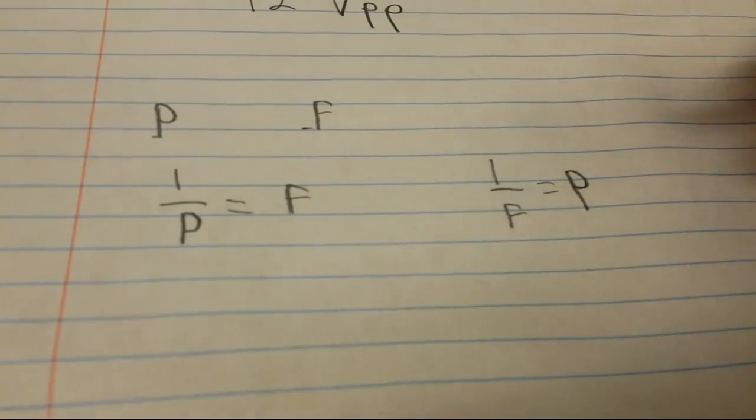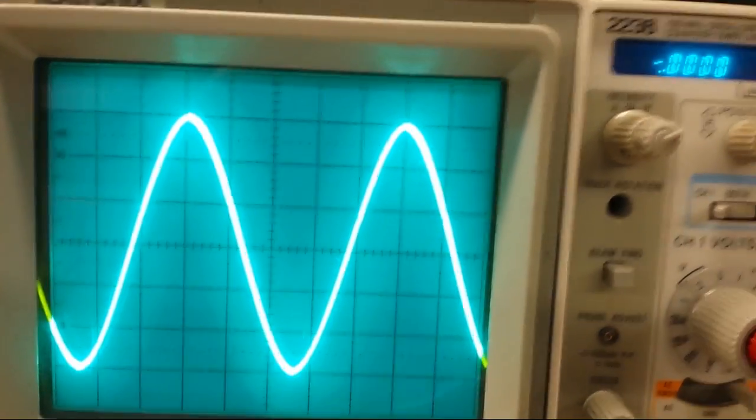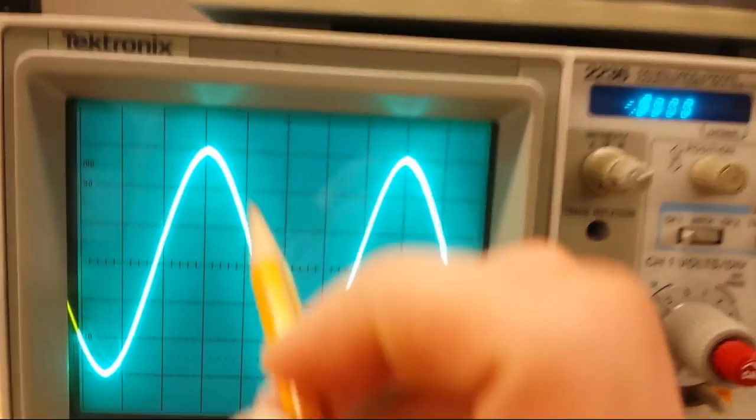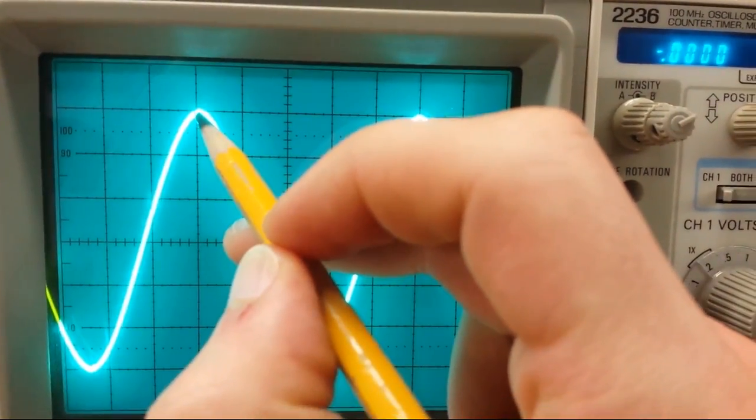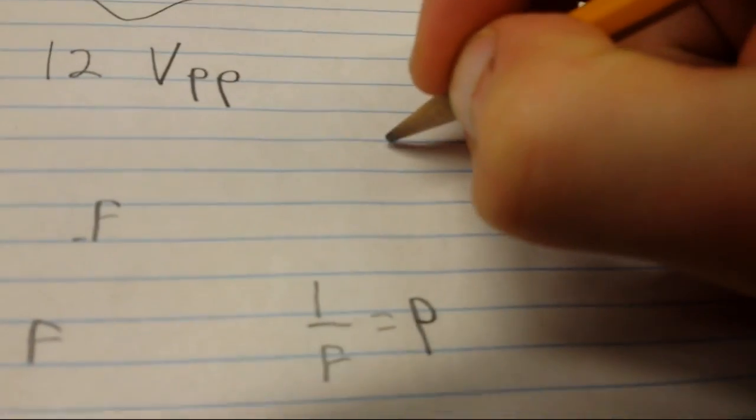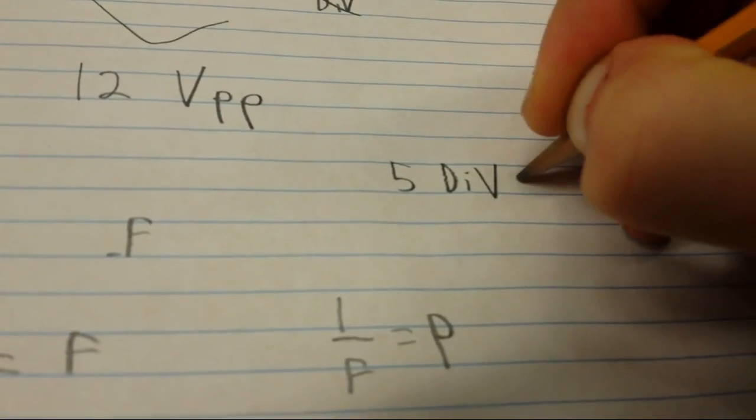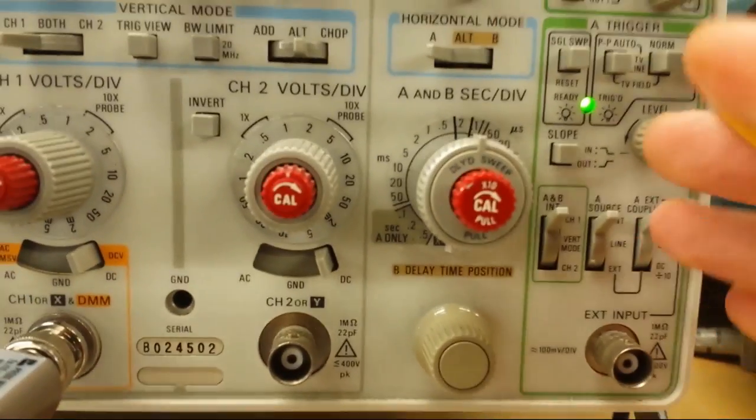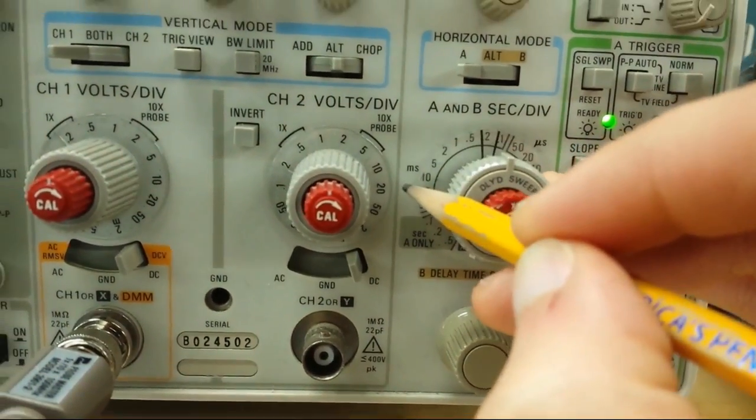So, just like what we did with the amplitude, we'll count the divisions. So, one division, two division, three division, four division, five divisions. And, we'll go, so five DIV for division. Multiply by, now we come over to here to our scope, and we see that we're on 0.2, I know it's kind of hard to see, milliseconds.